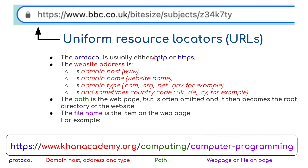The protocol is usually either HTTP or HTTPS — the S stands for 'secure', indicated by a padlock. The website address is the domain host: www, the website name, and then the type such as .com, .org, .net, or country-specific extensions like .co.uk, .de, or .it for Italy. The path is the web page location, though it's often omitted and defaults to the root directory. The file name is the specific item — for example, 'Computer Programming' sits in the folder path 'Computing' on the website.